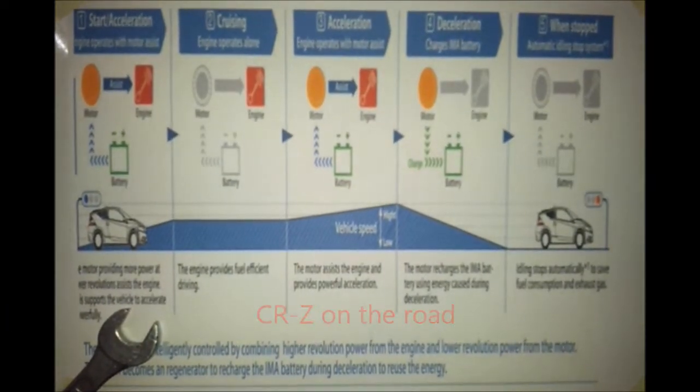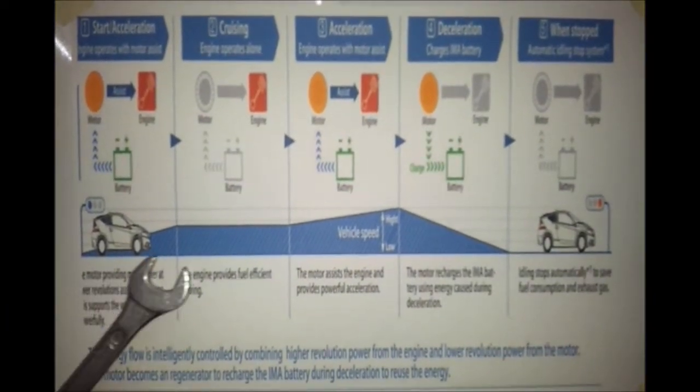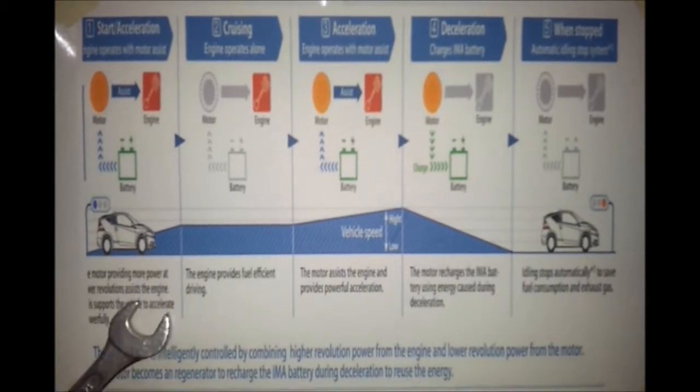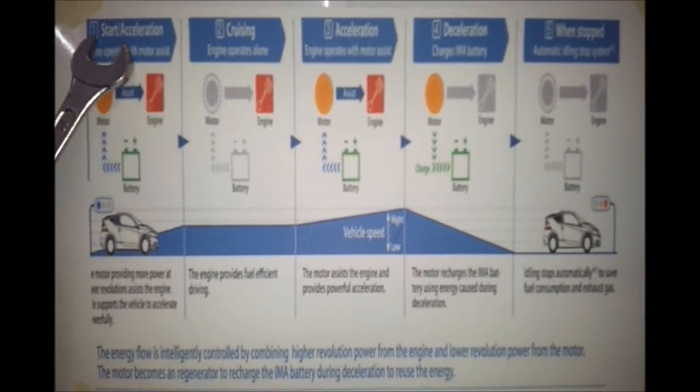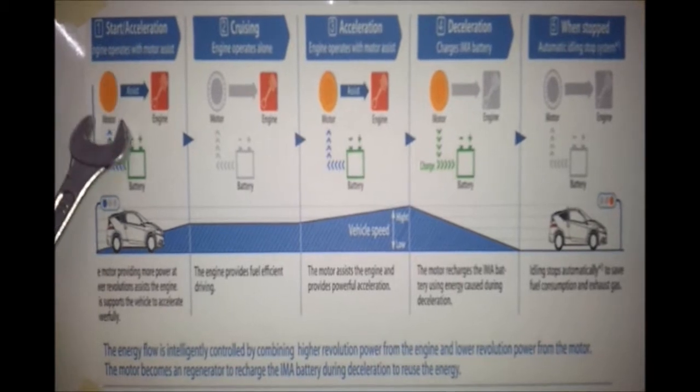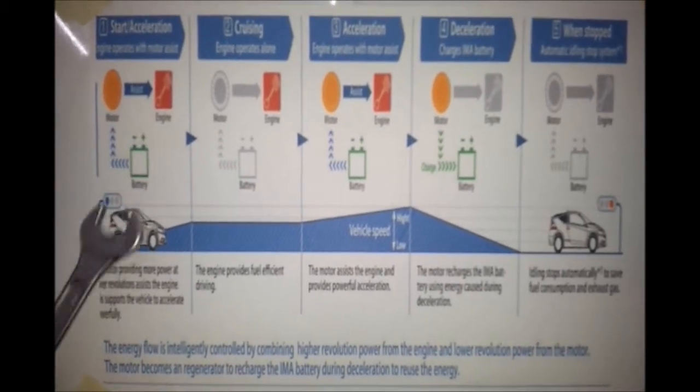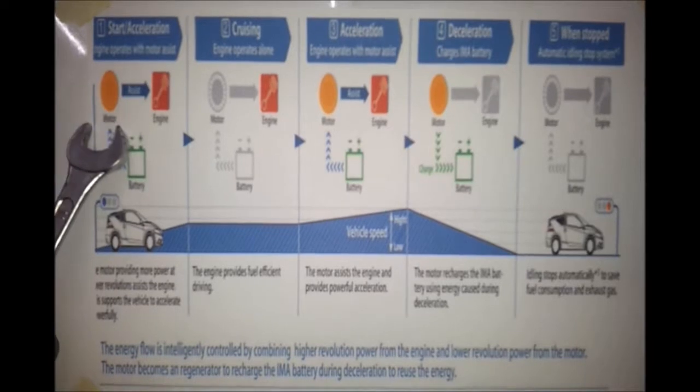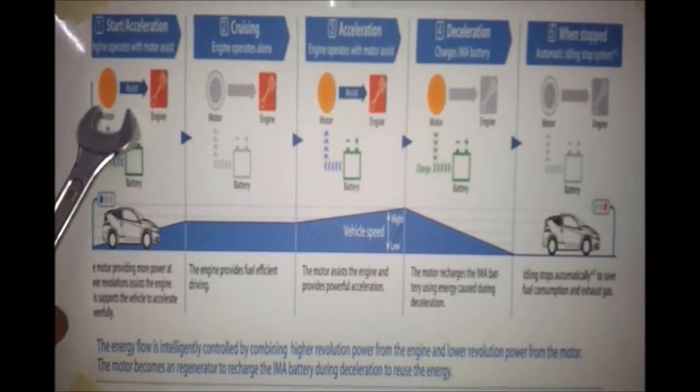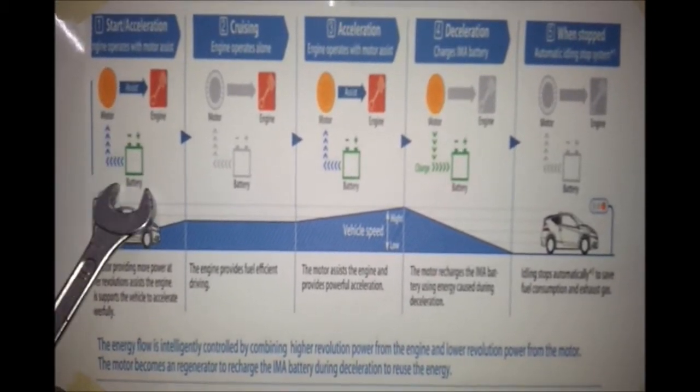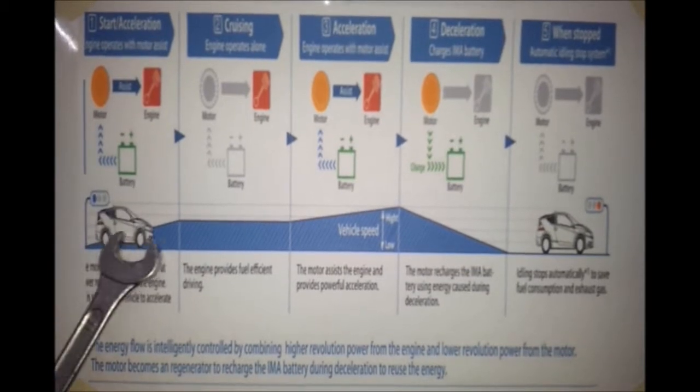This is how Honda CR-Z hybrid powertrain operates. The first stage is start and acceleration. When the vehicle starts or accelerates, the engine will operate with motor assist. The motor will use the electric energy stored in the battery to drive the wheel and give more acceleration to the vehicle.